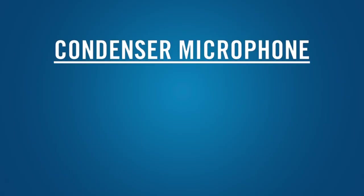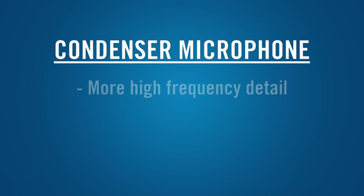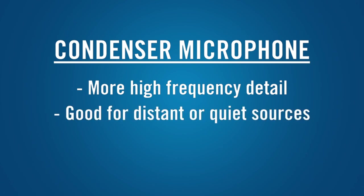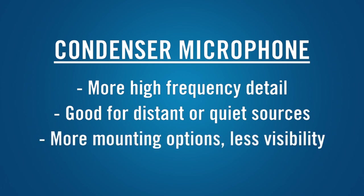Since there is no voice coil in a condenser mic, the sound waves only have to move the diaphragm. This gives condenser mics better high-frequency detail than dynamics, making them ideal for micing stringed instruments, percussion, piano, or subtle vocals. Condenser mics usually have higher output than dynamics, so they're good for distant or quiet sources. Since there's no magnet in a condenser mic, they can be made extremely small, which makes it easier to mount them in tight spots and make the mic less visible.